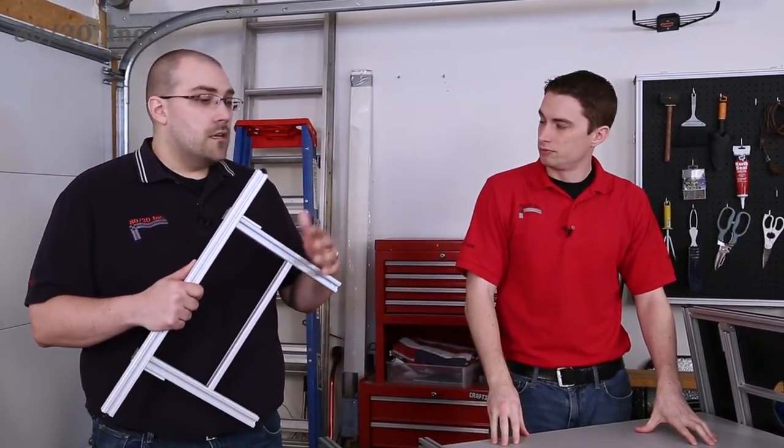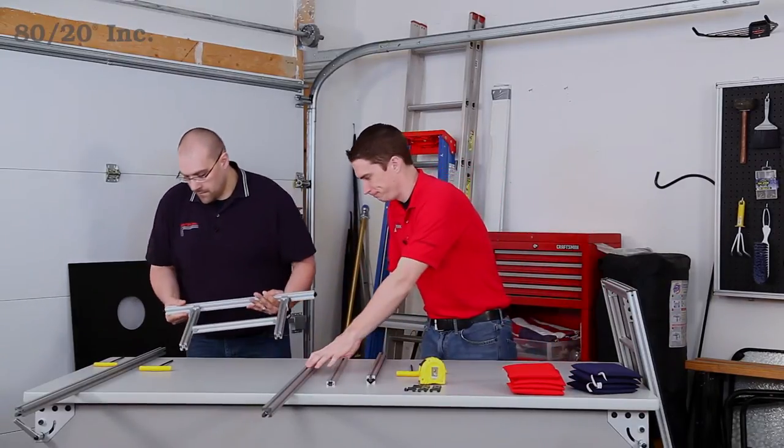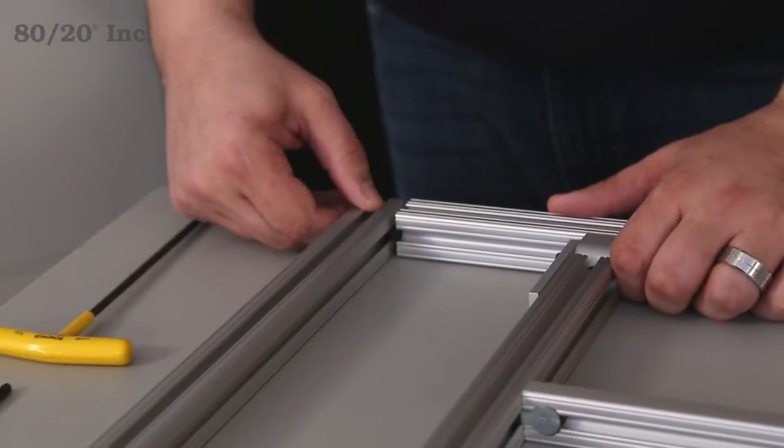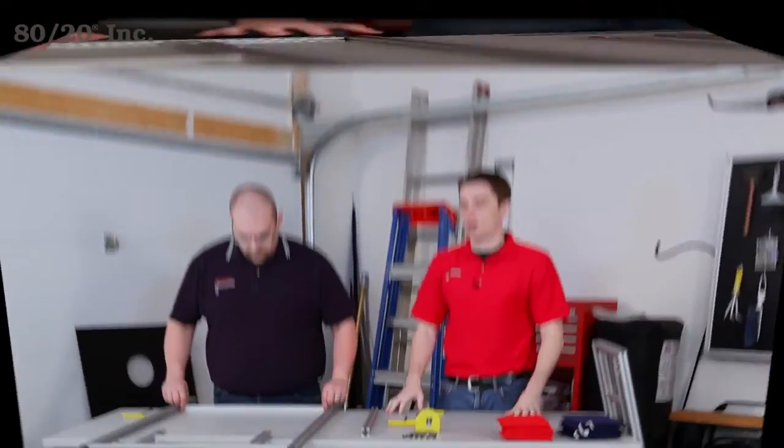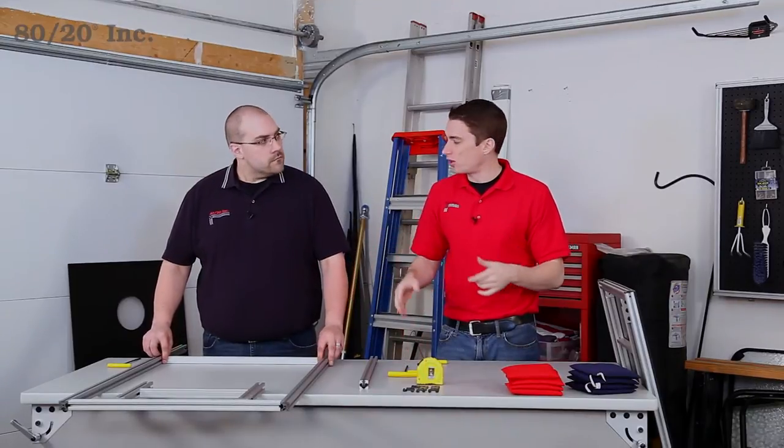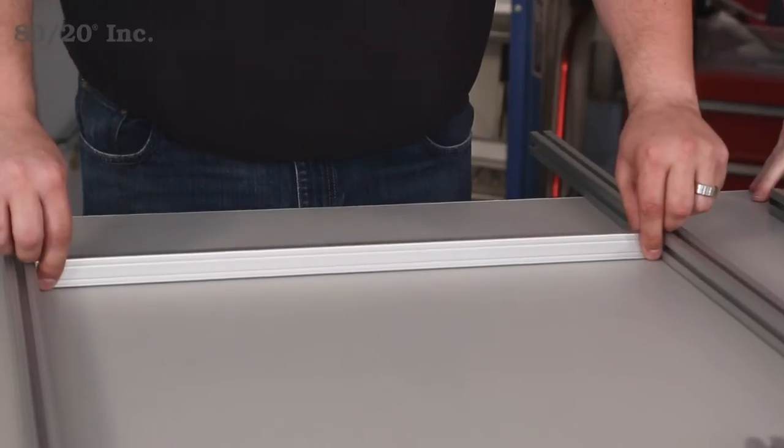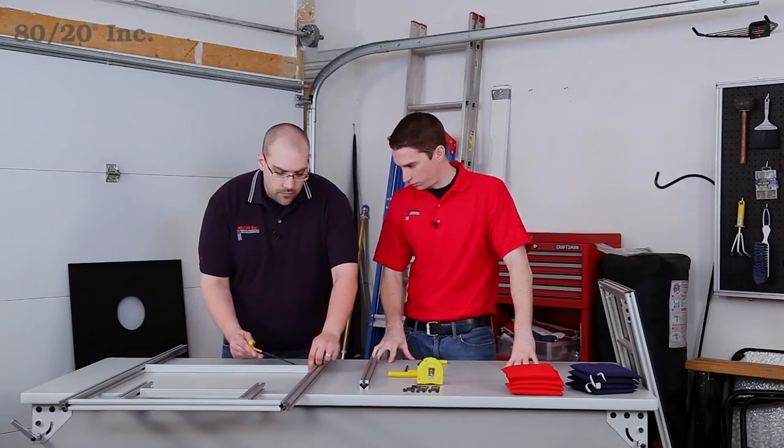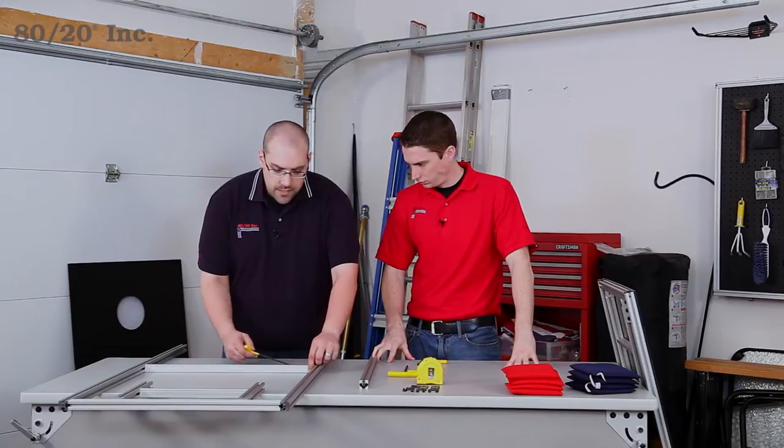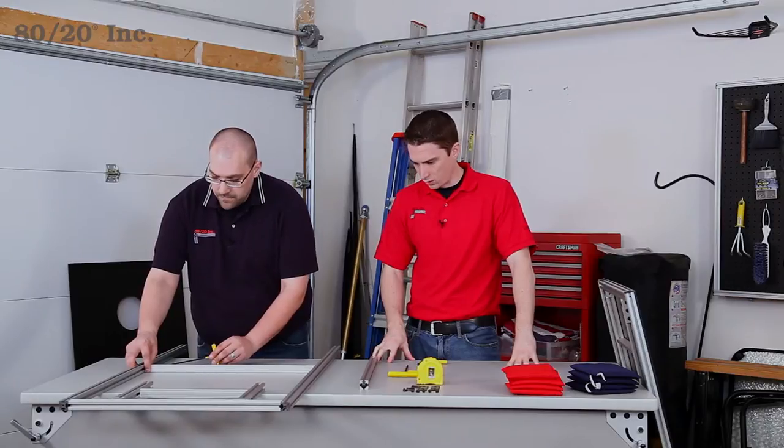Before we put on our last bar, we're going to put our center support into place for the panel. I'm going to slide the center support up here and start tightening it down. The reason we've added the center support is that way we'll keep the panel from vibrating and making any noise as we're using this board. It's a great idea. Now once we're done with that, we're going to take our last bar and finish off the frame.